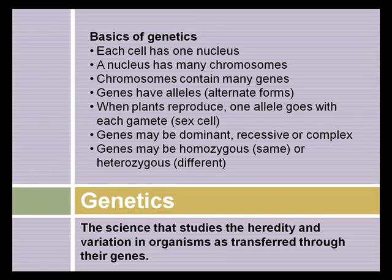If a gene is homozygous, it has the same allele in each of the pairs. If it's heterozygous, they have different alleles and can show different genetic traits based on whether the genes are dominant, recessive, or complex. More about all this in upcoming slides.